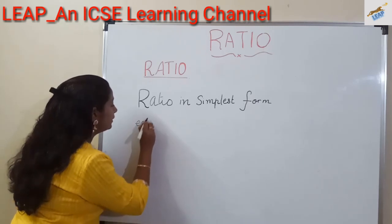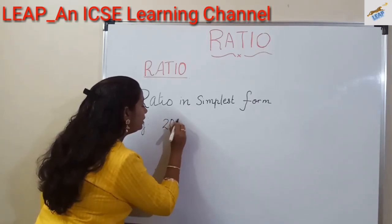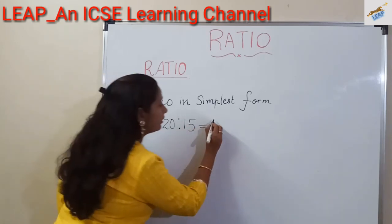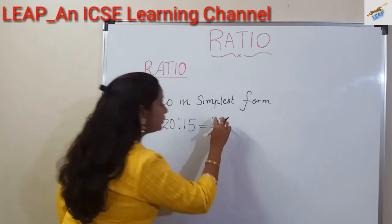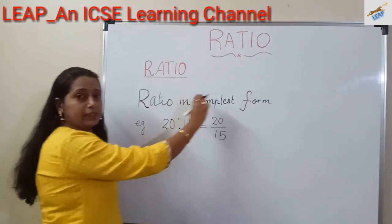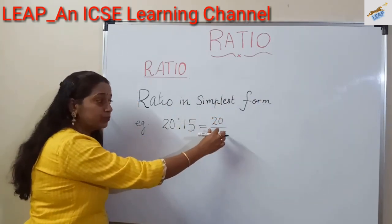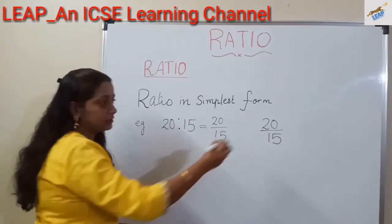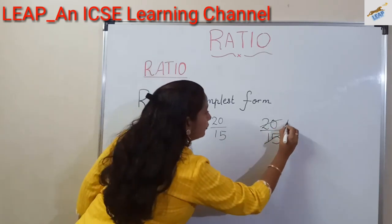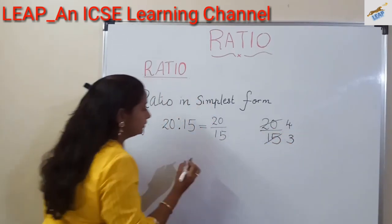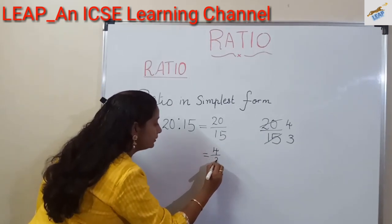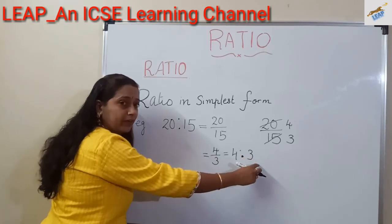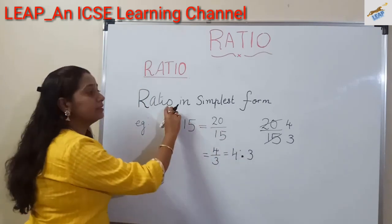For example, consider a ratio 20 is to 15. We can express 20 is to 15 as 20 by 15. This is not in simplest form. So we can make 20 by 15 into simplest form by cancelling the common factor. We get 4 by 3, or 4 is to 3. Since 4 and 3 have no common factor other than 1, this 4 is to 3 is in simplest form.